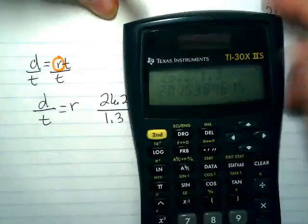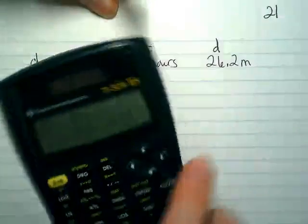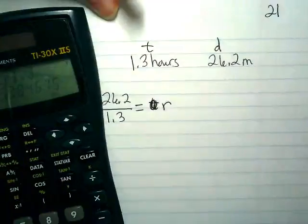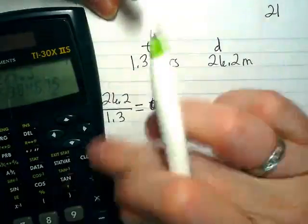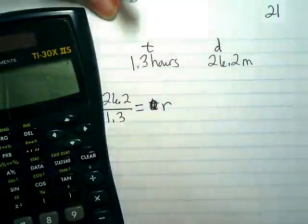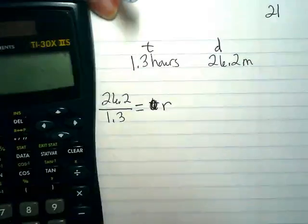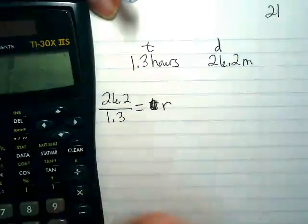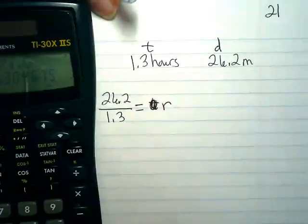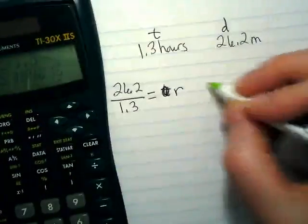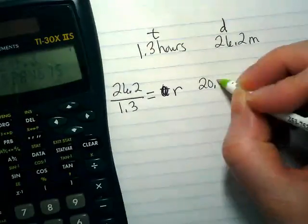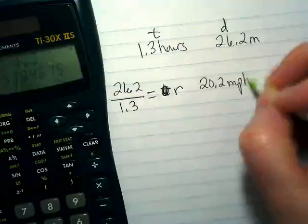So I'll just calculate it. 26.2 divided by 1.3. That's wrong. Nope, that's right. 20.2 miles per hour.